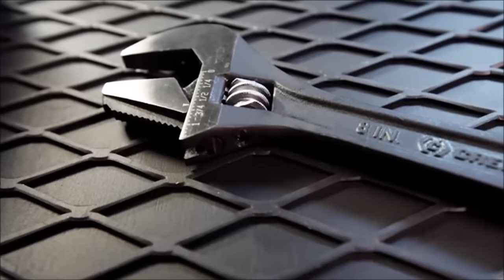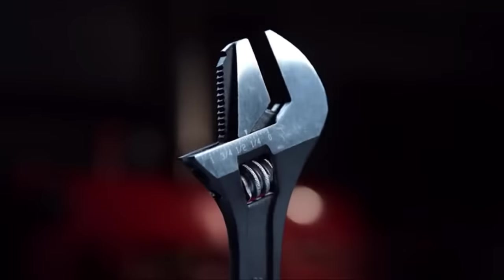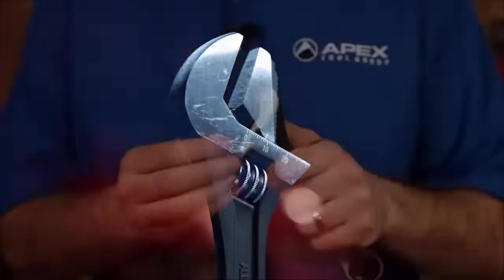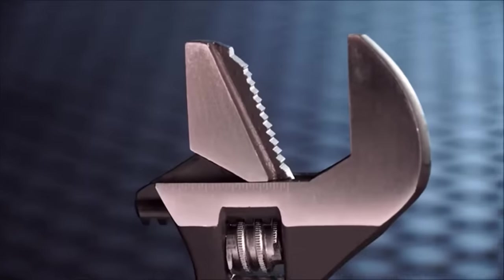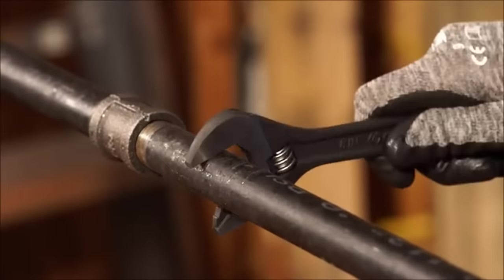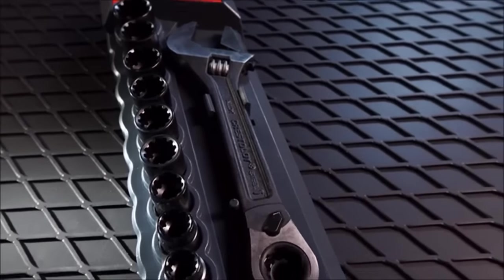What sets this wrench apart is its wide jaw opening, which accommodates different fastener sizes with ease, and its pass-through ratchet, perfect for those long threaded rods and tight spaces. The included universal socket further enhances its adaptability, working effortlessly with various fastener types including hex, square, spline, and e-torques.